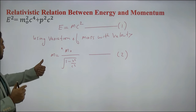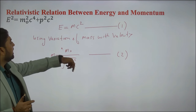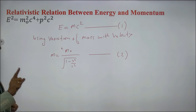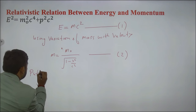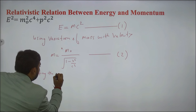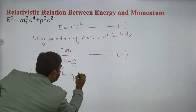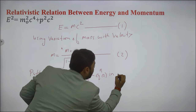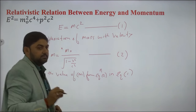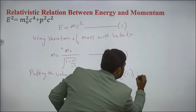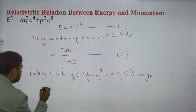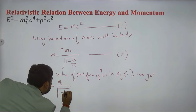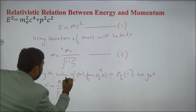Now I am putting the value of M from equation two into equation one. Why? Because our objective is to find the relation between E and M₀. Substituting, we get E = M₀C² / √(1 − v²/c²), which I am taking as equation number three.